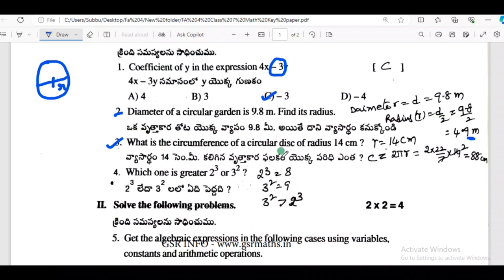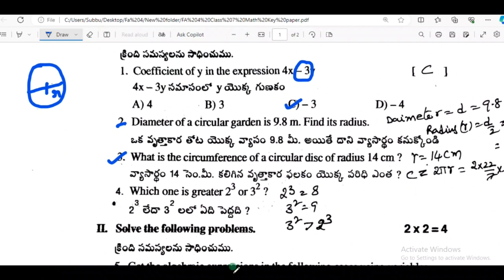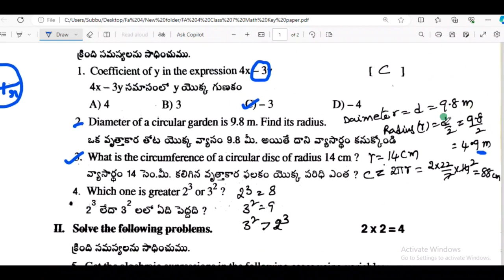Next, the third one. What is the circumference of a circular disk of radius 14 cm? So what is the circumference of a circular disk of radius 14 cm?